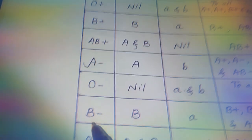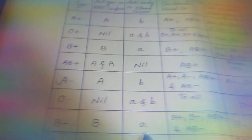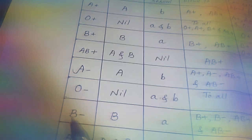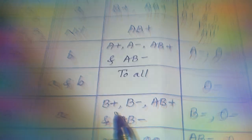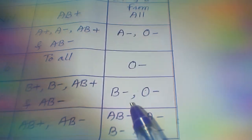For B negative blood group, antigen B is present on the RBC surface and antibody A is in the blood serum. A B negative person can donate blood to B positive, B negative, AB positive, and AB negative persons, and can receive blood from B negative and O negative persons.